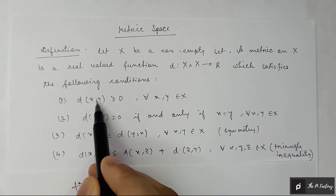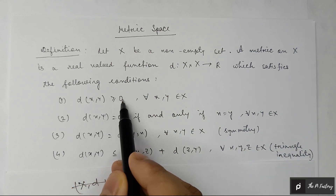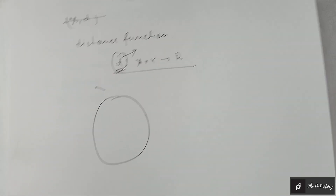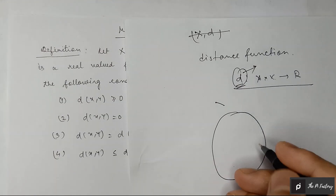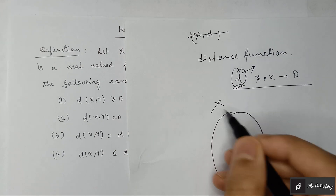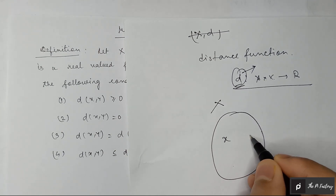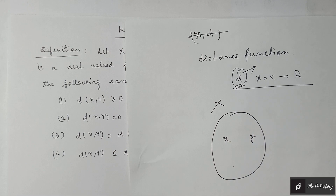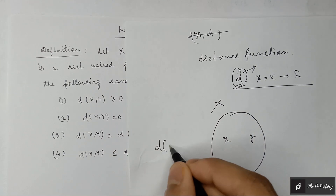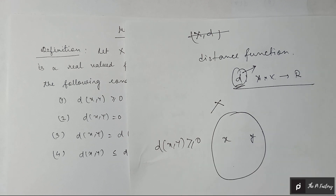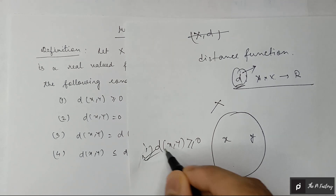The first condition is d(x, y) is greater than or equal to zero. Obviously, if you take a non-empty set X and consider x and y as two points, then the distance between these two points is always greater than or equal to zero. This is the first condition.